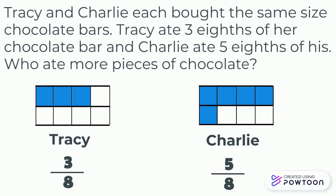After completing our model, we can clearly see that Charlie ate more because three same-size pieces is less than five same-size pieces.